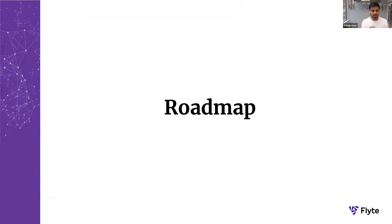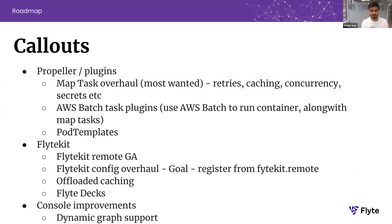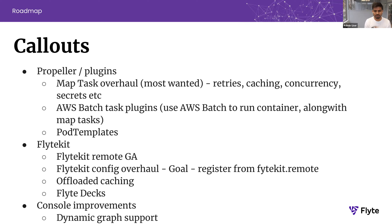Quick look into what's coming up on the roadmap — we are working on a bunch of things. A huge ask, one of the most wanted features, is the map task overhaul. This is to support retries within map task, caching, concurrency control, secrets, etc. All of that is slated for this month, and Dan has been driving a lot of work on this.